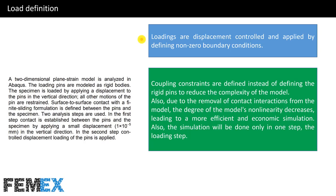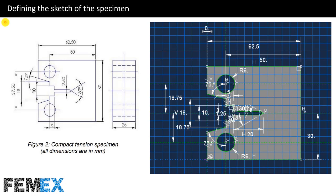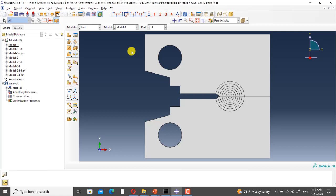Due to the removal of contact interactions from the model, the degree of the model's non-linearity decreases, leading to a more efficient and economic simulation. Also, the simulation will be done only in one step, the loading step. Now I want to talk about defining the sketch of the specimen. This sketch is illustrated in the reference paper, and according to this sketch, I have created my sketch to model the specimen in Abaqus. This is the compact tension specimen, and here we have the partitions to create the focused mesh.